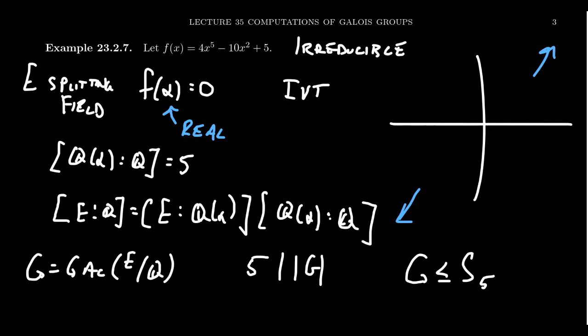When you look at S5, it's divisible by five, so it has an element of order five. This follows from Cauchy's theorem. What elements of S5 can have order five? It's got to be a five cycle, so you're going to get something like one two three four five without loss of generality, depending on how we label the five roots.